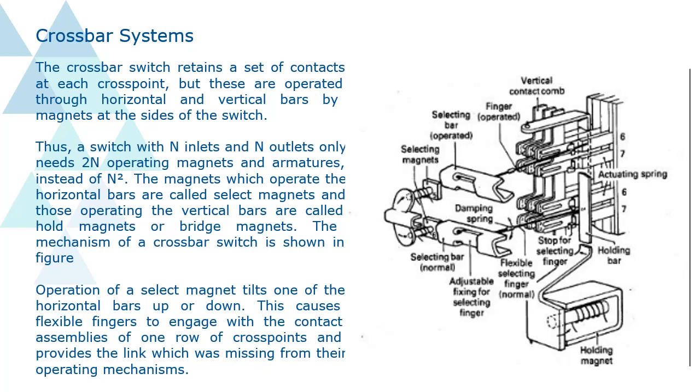Thus, a switch with N inlets and N outlets only needs two N operating magnets and armatures, instead of N square. The magnets which operate the horizontal bars are called select magnets and those operating the vertical bars are called hold magnets or bridge magnets.